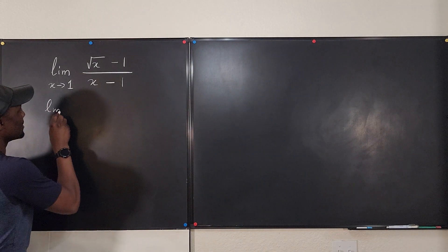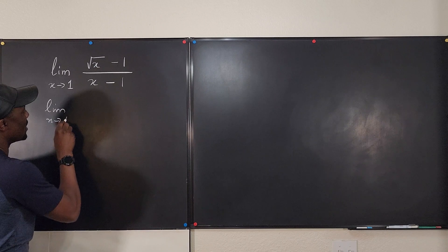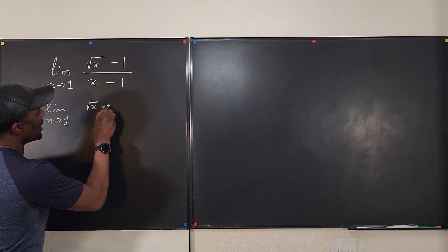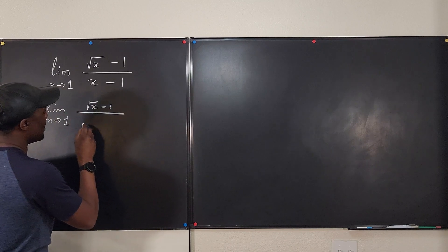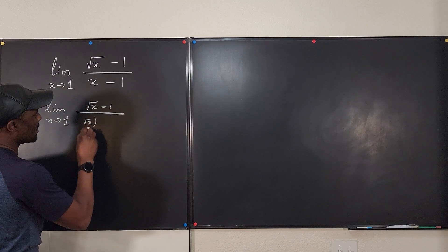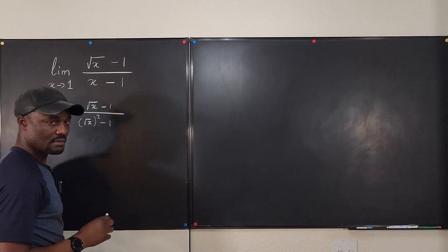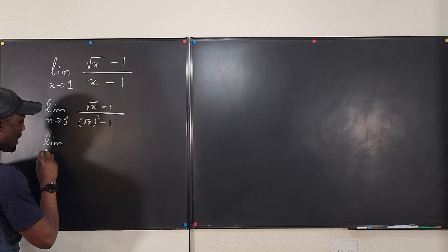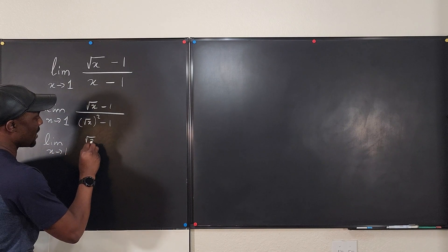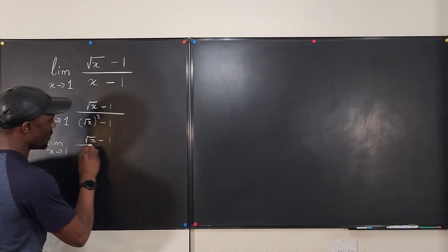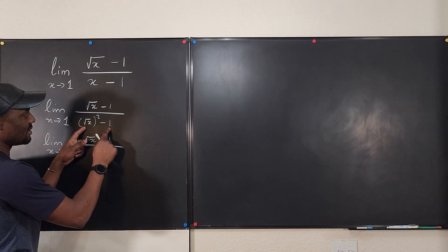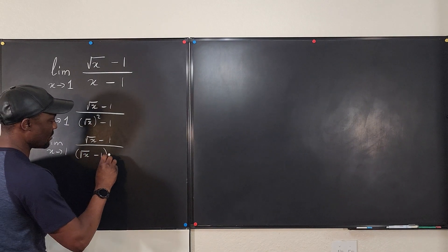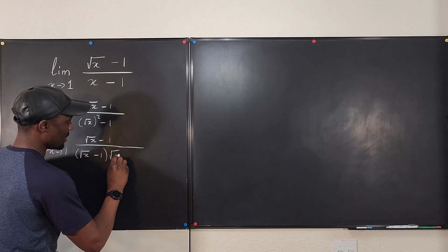I can say that this is the limit as x goes to 1 of the square root of x minus 1 divided by the square root of x minus 1 over, if I write this as the difference of two squares, it's going to be the square root of x minus 1 times the square root of x plus 1.